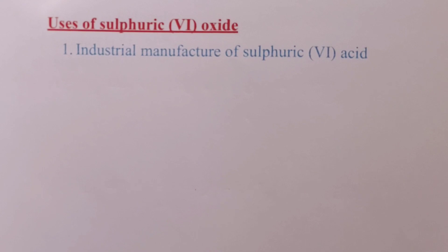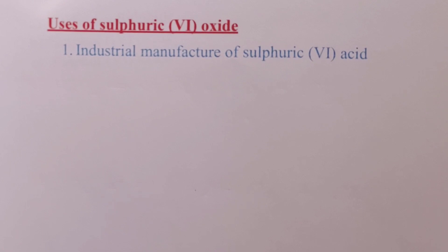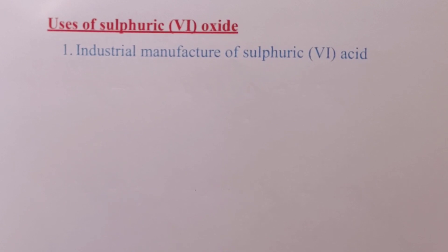Sulfur trioxide is basically used in the industrial manufacture of sulfuric acid in the contact process. Dear students, we have come to the end of our video where we have reviewed gases in sulfur and its compounds. Make sure to join us in the other categories of gases as mentioned in the introduction. Thanks for your time and we ask that you continue to keep it the Kenyan teacher for more of such reviews.